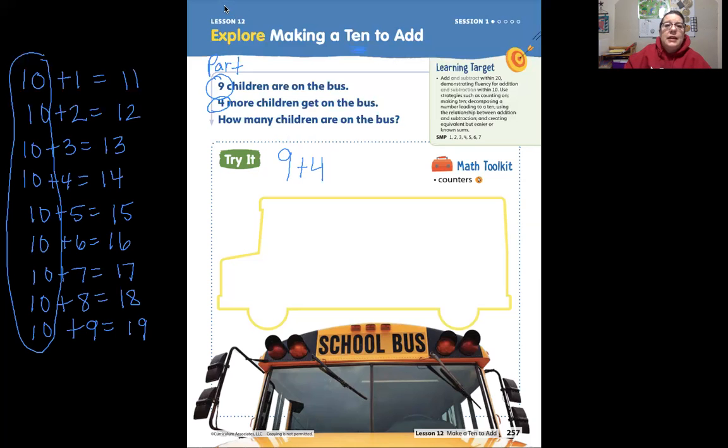How many children are on the bus? Well, remember what I said that if you can make a 10, let's count on from nine up to 10. Nine, 10, right. We just need one more. So nine, 10. So if I have one more, I can make a group of 10. But here it says that I have four. So I'm going to draw all four that I need. One, two, three, four.